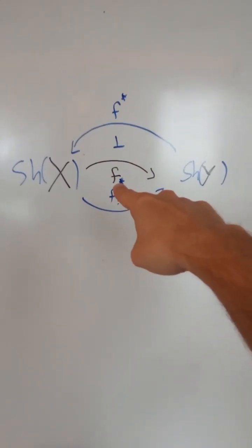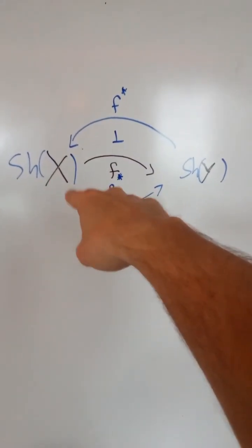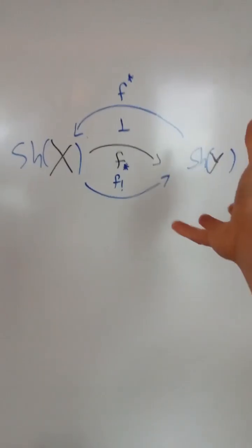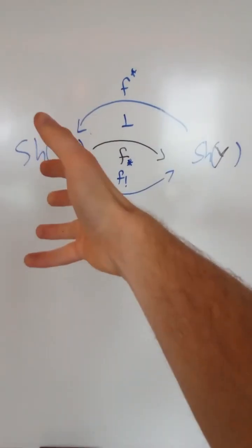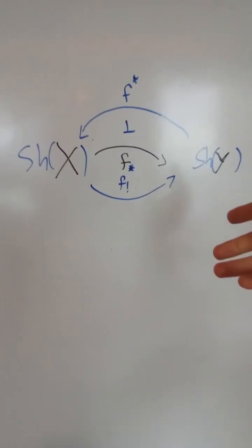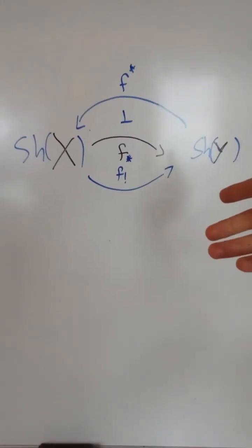This induces a push forward functor from the sheaf category of sheaves on X to the category of sheaves on Y, which has a left adjoint, which is a pullback functor from sheaves on Y to sheaves on X. And then we also get a push forward with compact support, sometimes called exceptional push forward, from X to Y.